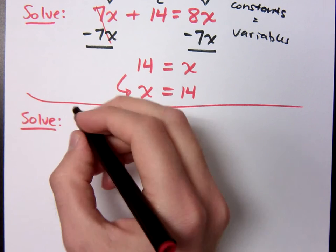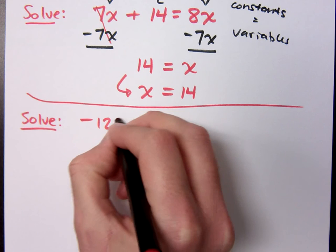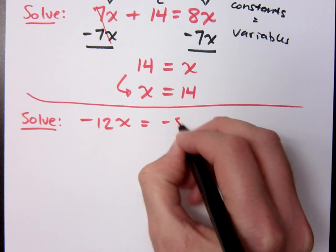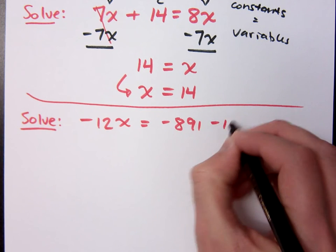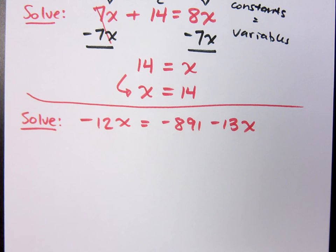But if that's something that helps you keep things in order, then go for it. What if I have this example? Negative 12x equals negative 891 minus 13x.